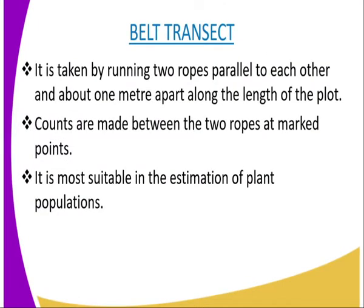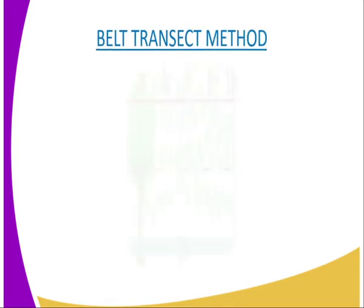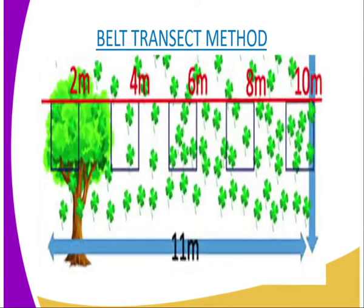Our second population estimation method is the belt transect. In the belt transect, it is taken by running two ropes parallel to each other and about one meter apart along the length of a plot. A diagrammatic representation of the same will help you understand what we are saying.